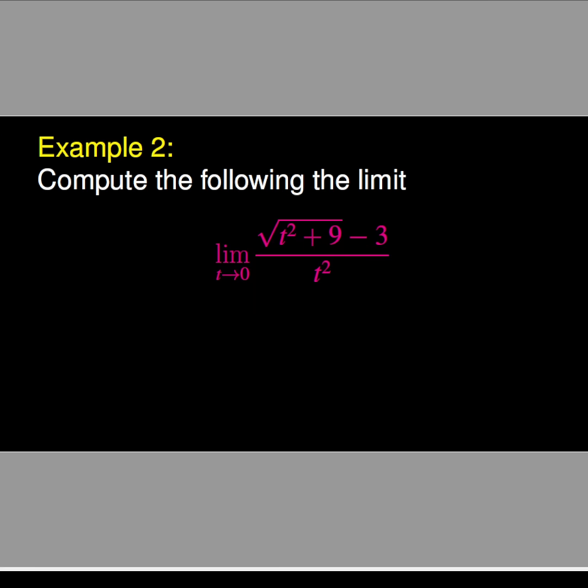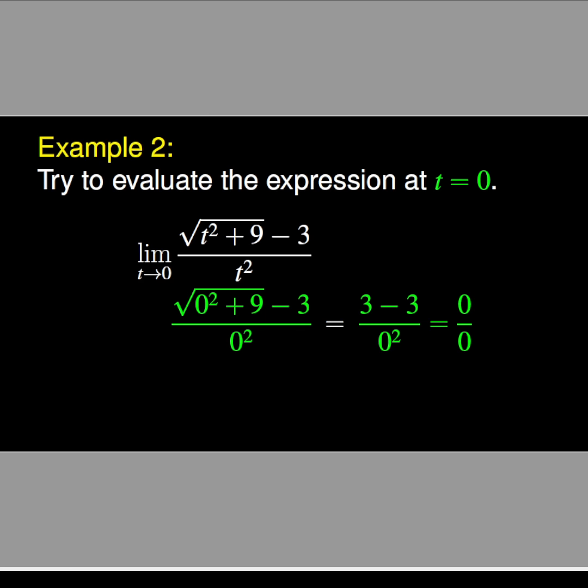As we did in the first example, we evaluate the expression for t equals 0. We obtain the square root of 0² + 9 minus 3, over 0².